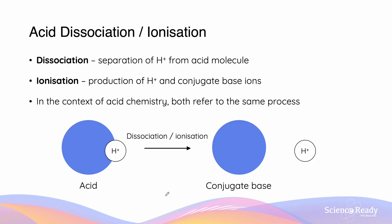In the context of Arrhenius dissociation and ionization, they are going to be the same process. However, dissociation refers to the separation of H⁺, whereas ionization is the production of H⁺ and conjugate base ions.